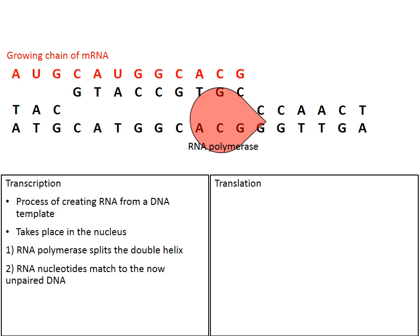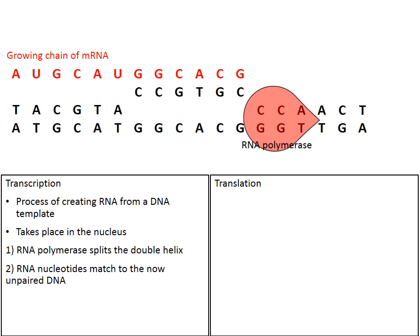At the back end, the DNA begins to come back together — it re-zips itself. The process continues: RNA polymerase breaks apart the A's and T's and C's and G's, the mRNA is added to the growing chain, and at the back end the DNA starts to zip back together.